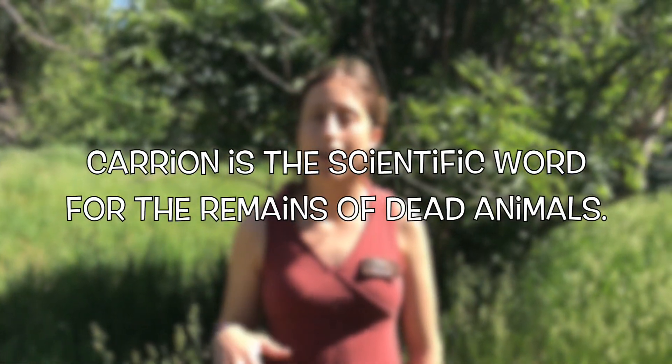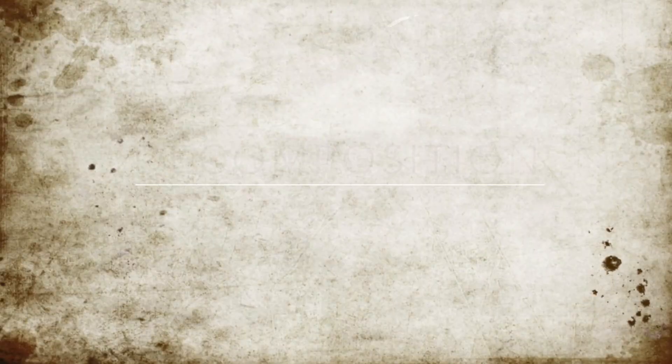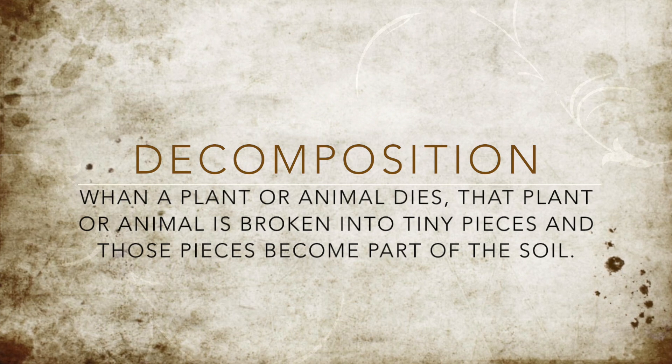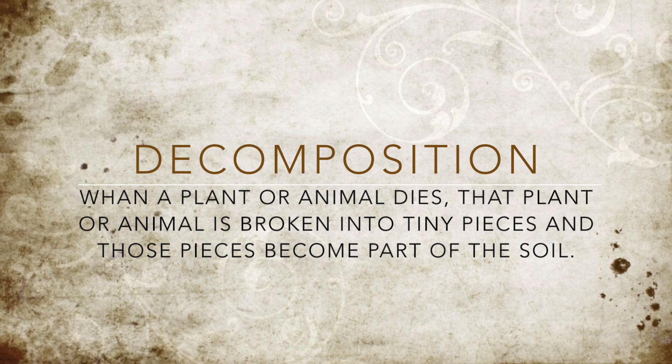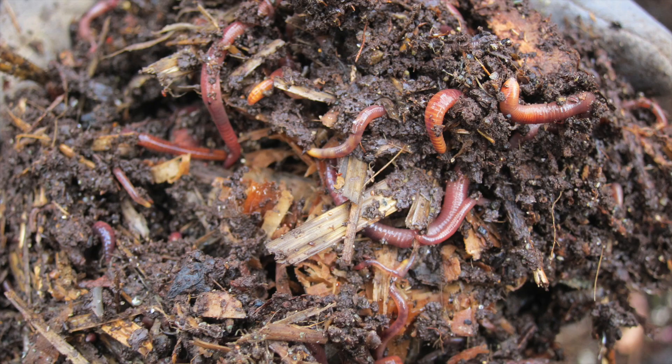It's Naomi from the Wenatchee River Institute and we're moving through the food chain here. The coyote has now grown older and dies one spring day, but the food web doesn't end here. Coyote has now become carrion — carrion is the scientific word for the remains of dead animals. Carrion is something that most people like to avoid. It's visually unpleasant and it emits foul odors, but the decomposition of carrion is an important process in the web of life. Decomposition is a natural process. When a plant or animal dies, that plant or animal is broken into tiny pieces and those pieces become a part of the soil. This process occurs with the help of decomposers.